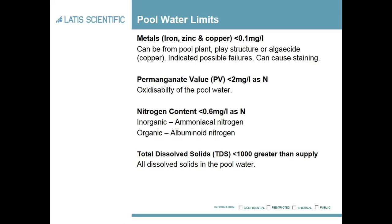Ideally you want oxidised matter to be less than 2 milligrams per litre. Once you start getting over that, generally the system is being overloaded. It also has the nitrogen content, which includes inorganic nitrogen — that is ammoniacal nitrogen — and an organic constituent which is albuminoid nitrogen. These constituents really show you the levels of overloading of the pool.